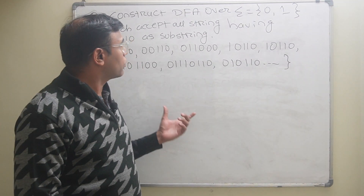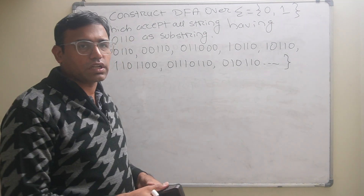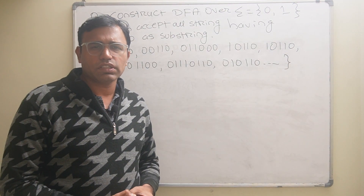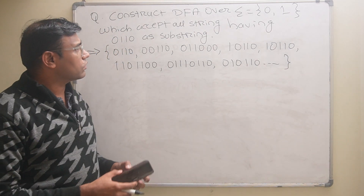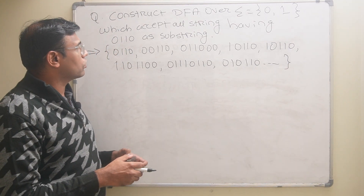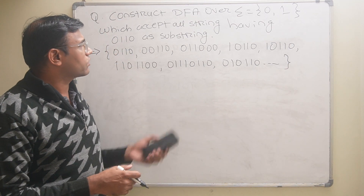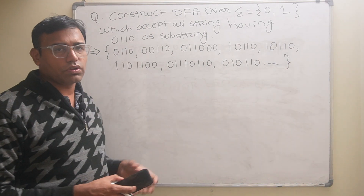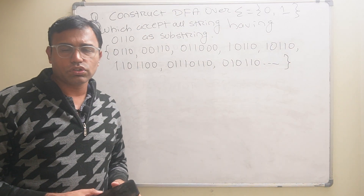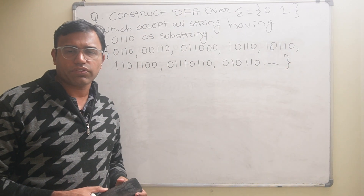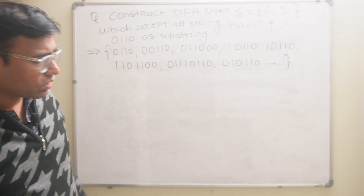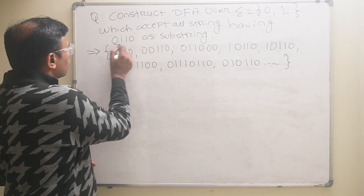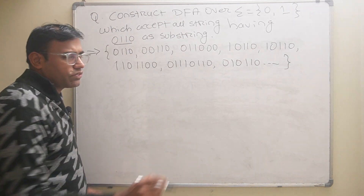Hello friends. The topic of this video is construction of DFA. The question is: construct a DFA over input symbols 0 and 1 which accepts the substring 0,1,1,0. We have to construct the DFA which will accept 0,1,1,0 as a substring.